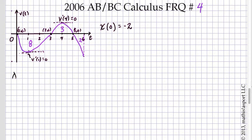So in part A, we're looking over the time interval from 0 to 6, and we have to find the time and the position of the particle when it is farthest to the left.